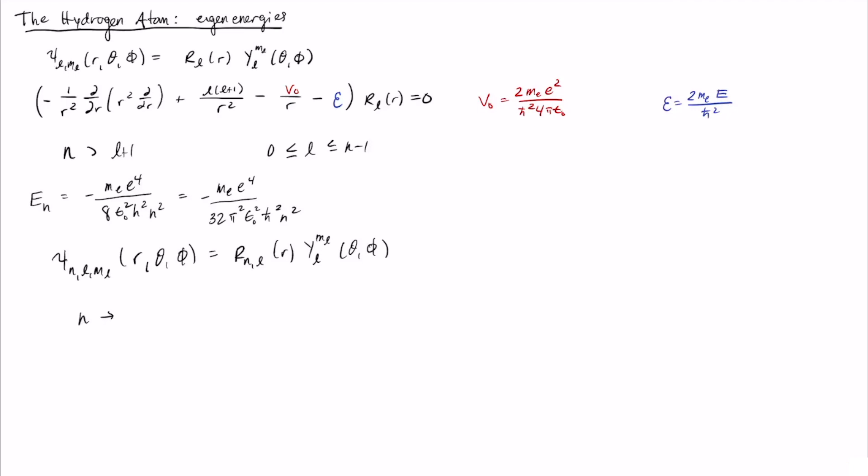So first off there's n, which is known as the principal quantum number. And then as you see, this is the only one that goes into the energy for the hydrogen atom. There's also l, which is the angular momentum quantum number. And then there's m sub l, which is known as the magnetic quantum number.